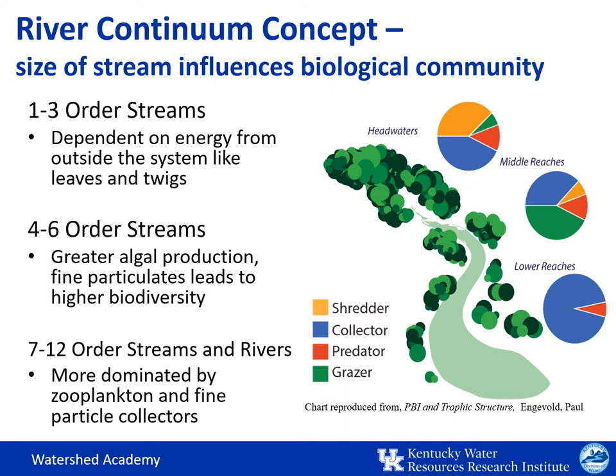Depending on the size of the stream, different communities of organisms are expected to live in different places. The ecosystem functions differently based on the upstream drainage area, from the smaller drainage areas of first to third order streams to the larger drainage areas of seventh to twelfth order streams. The drainage area contributes to the hydrological and geomorphological conditions which affect the stream's ability to provide habitat and support different types of organisms.